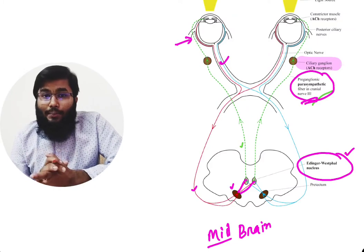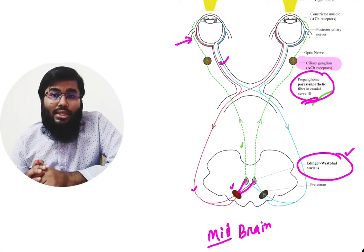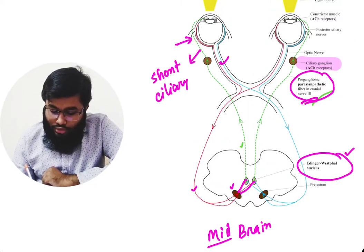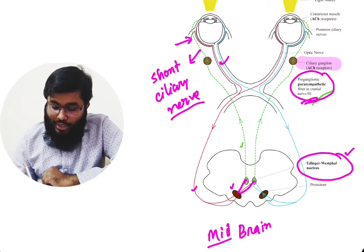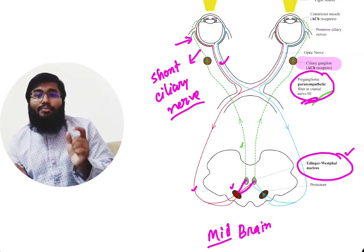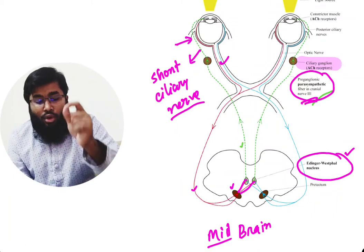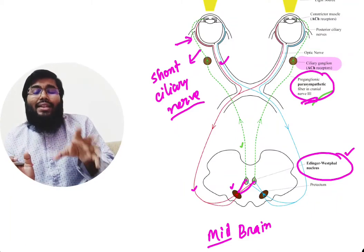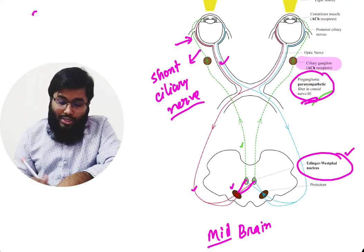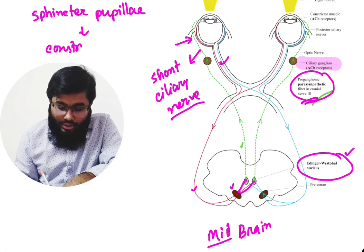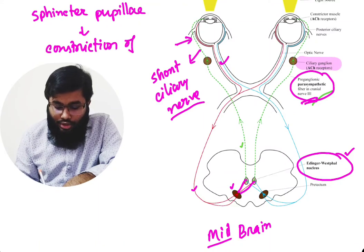From the ciliary ganglion there appears another nerve known as the short ciliary nerve. The short ciliary nerve gives branches to the neuromuscular junction of our sphincter pupillae muscle, maintaining the tone of that muscle. The function of the sphincter pupillae — also called the constrictor pupillae muscle — is to cause constriction of the iris.